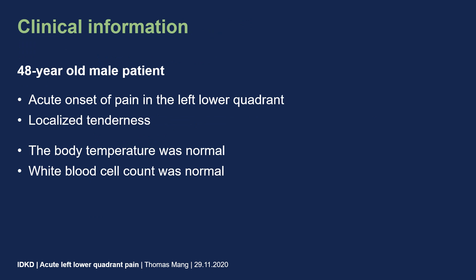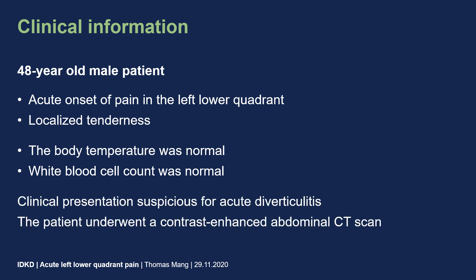I am presenting a case on a 40-year-old male patient that came to our hospital because of acute onset of pain in the left lower quadrant. The patient showed localized tenderness within this area. Surprisingly, the body temperature as well as the white blood cell count was normal. Because the symptoms were significant and the clinical presentation was suspicious for acute diverticulitis, the patient underwent a contrast-enhanced abdominal CT scan.